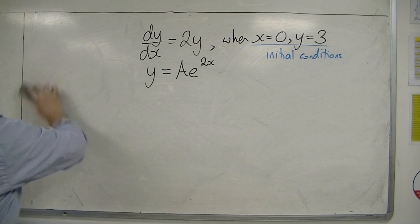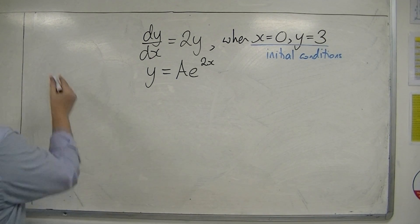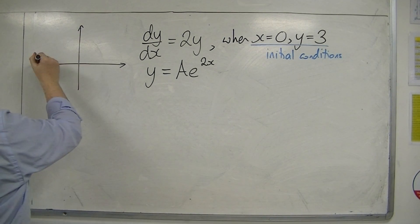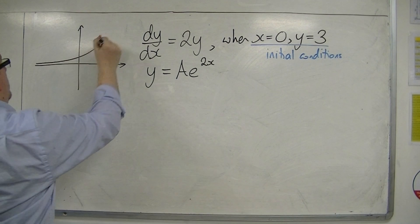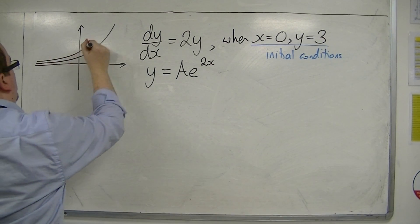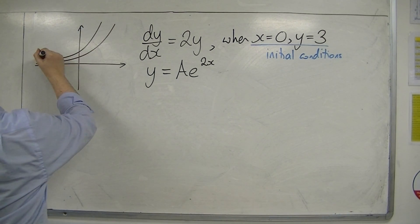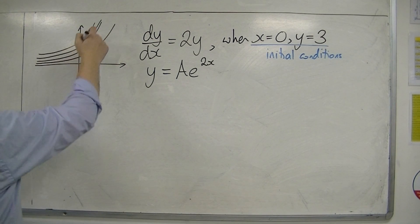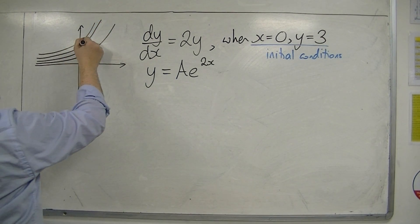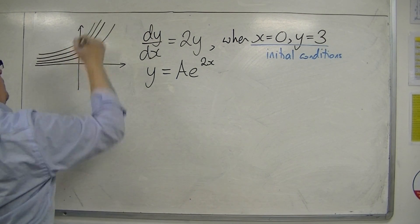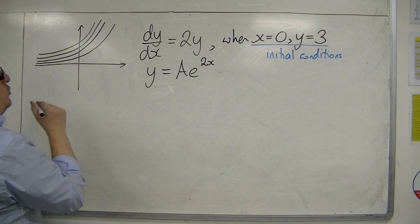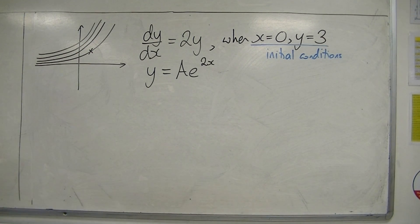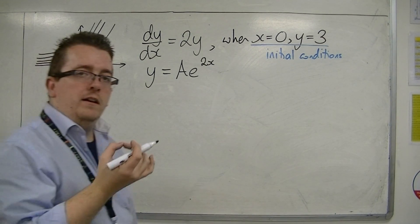Let me re-sketch that. So we'll have one curve like that, one like that, one like that, one like that — and these should become almost parallel. The initial conditions focus in on one particular curve.